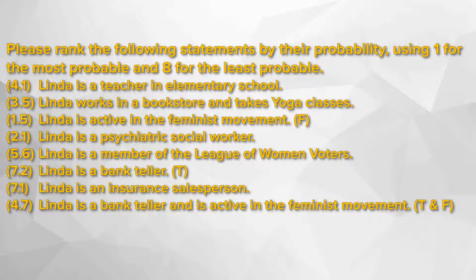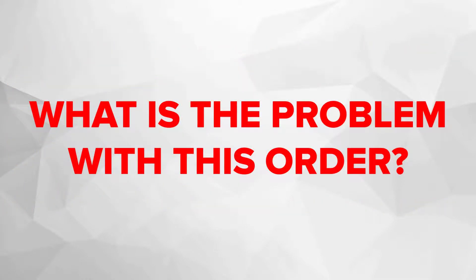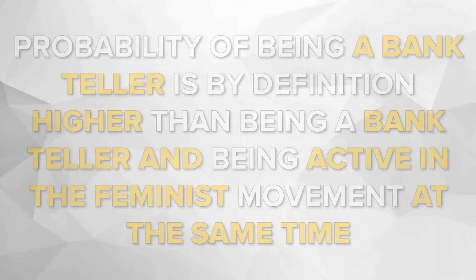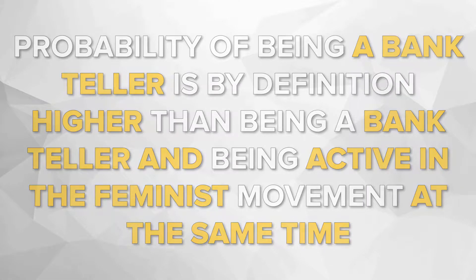More interestingly, both statistically naive subjects and those with more expertise in statistics show the same pattern. Here you can ask: what is the problem with this order? The answer is that the probability of being a bank teller is by definition higher than being a bank teller and being active in the feminist movement at the same time. More than 80% of participants in their study fall into the trap of conjunction fallacy and rated the probability incorrectly. That is conjunction fallacy.